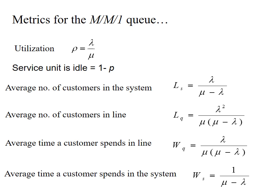Metrics in the MM1 queue: Utilization B equals lambda over mu. Service unit idle equals 1 minus B. Average number of customers in the system: Ls equals lambda over (mu minus lambda). Average number of customers in line: Lq equals lambda squared over (mu times (mu minus lambda)). Average time a customer spent in line: Wq equals lambda over (mu times (mu minus lambda)). Average time a customer spent in the system: Ws equals 1 over (mu minus lambda).